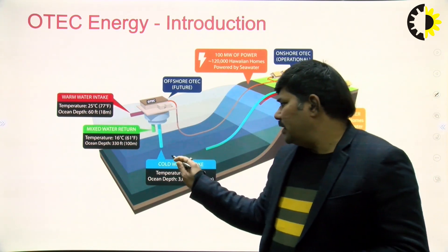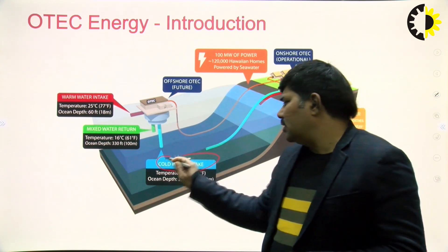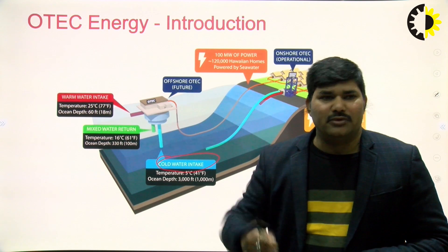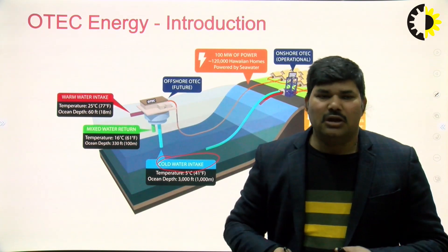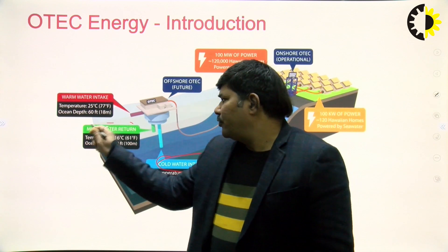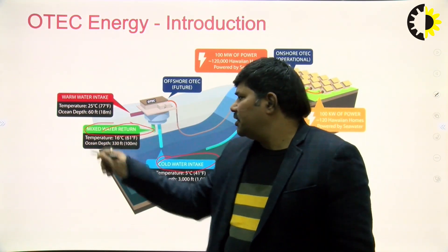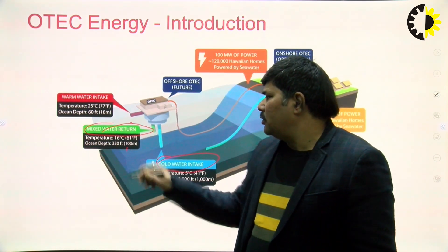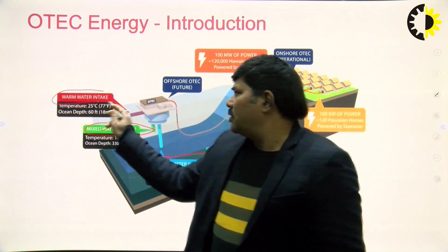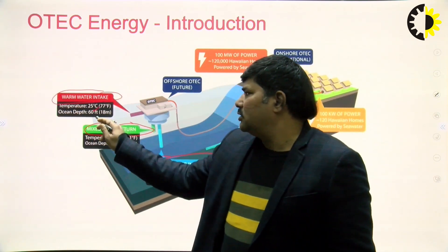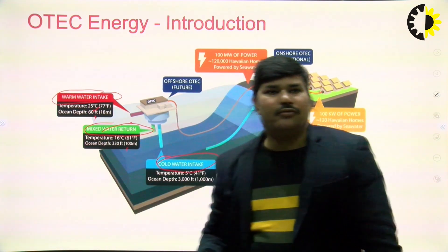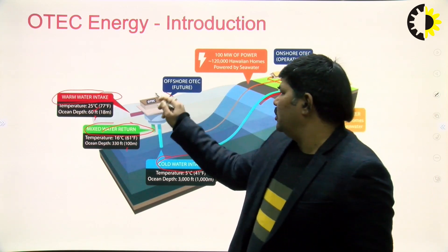You can see that the cold water intake temperature is 5 degrees centigrade at an ocean depth of about 3000 feet. The mixed water temperature is 16 degrees centigrade at 330 feet. The warm water intake temperature is 25 degrees centigrade at just 60 feet depth. You can also see the offshore OTEC system.